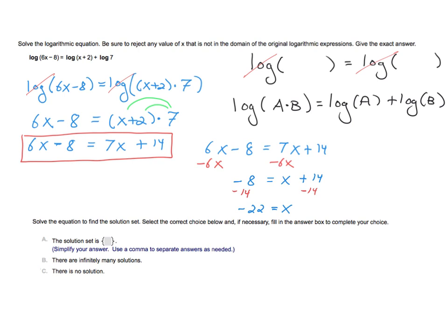And I get negative 22 is equal to x. So if there is a solution to this equation, it would have to be this number here. It'd be very tempting to choose a and then put your answer as negative 22. But I have to be careful here.